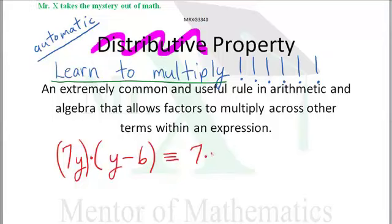but it means 7 times y times y. This 7y is the same as 7 times y. Now we multiply the 7 times y times the y and times the negative 6. So here's our 7y times y. My advice to you is to keep the minus sign.